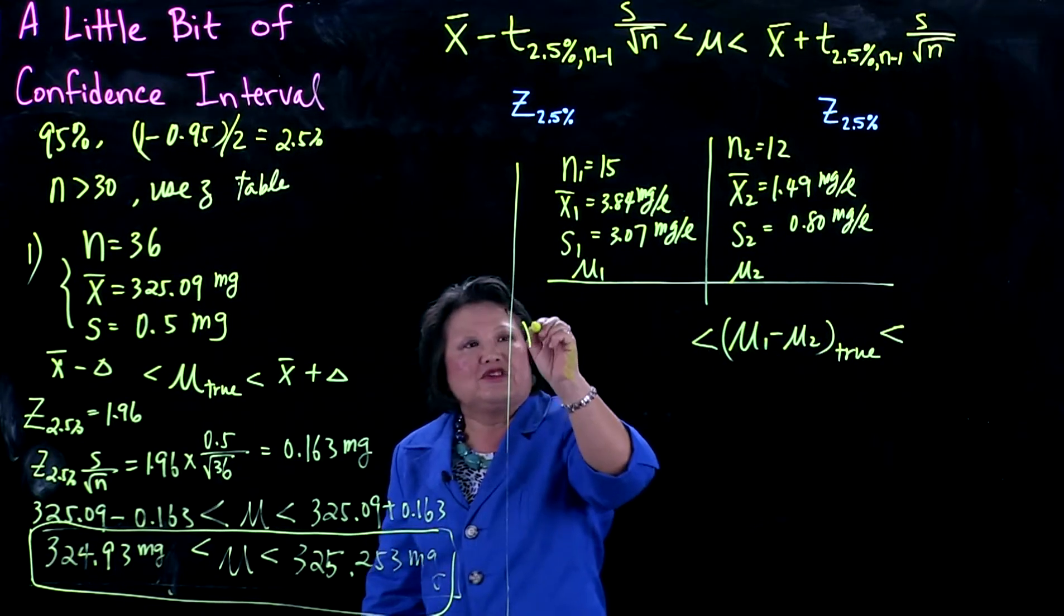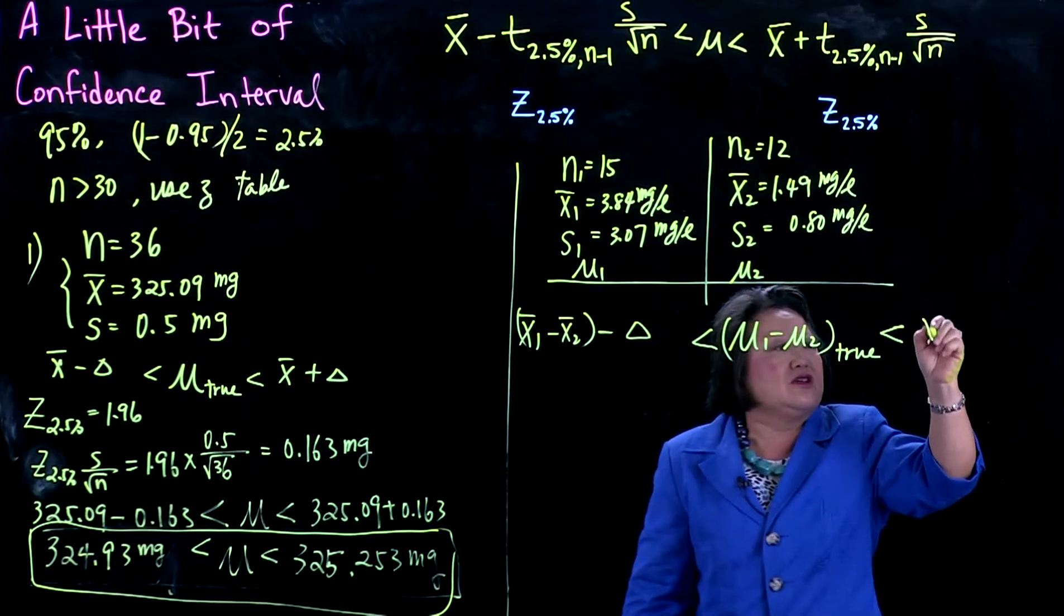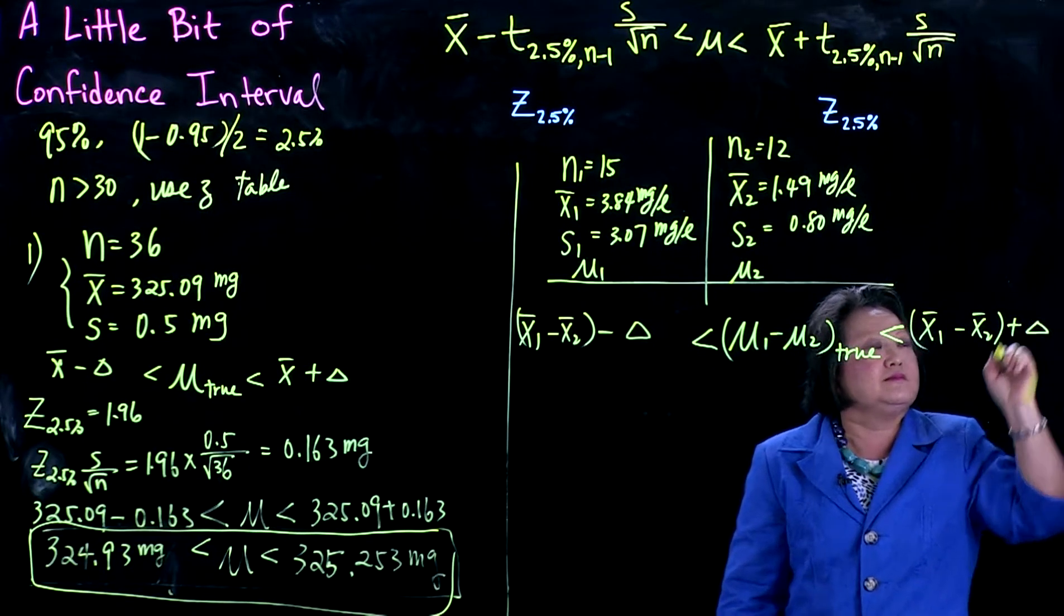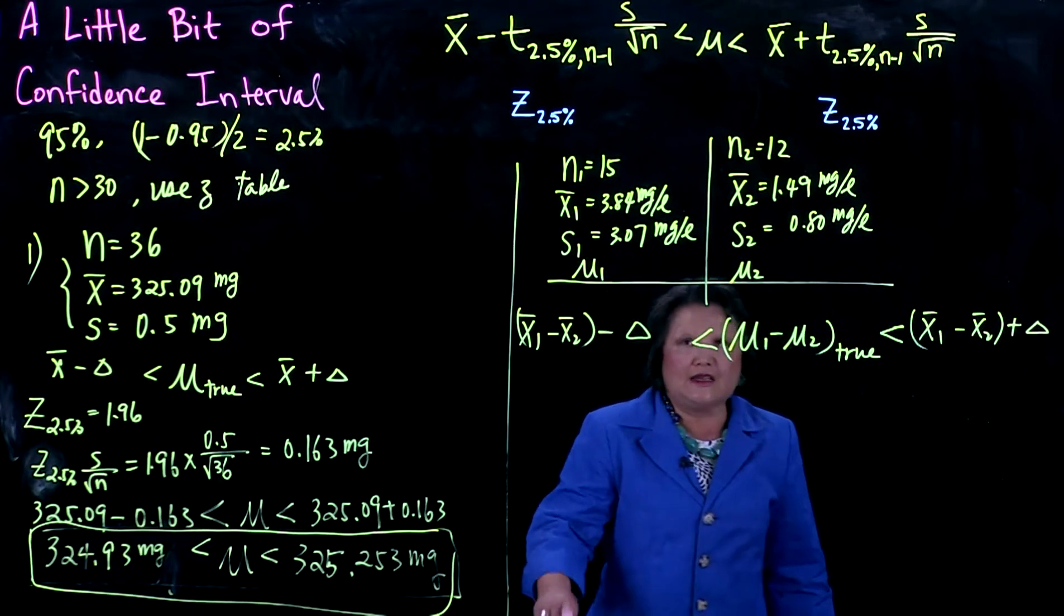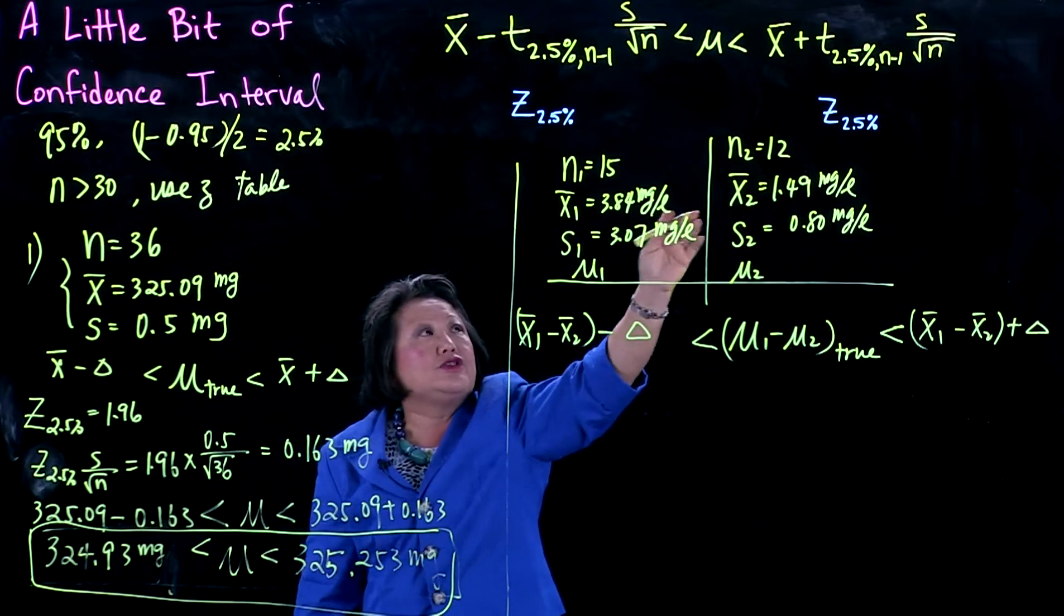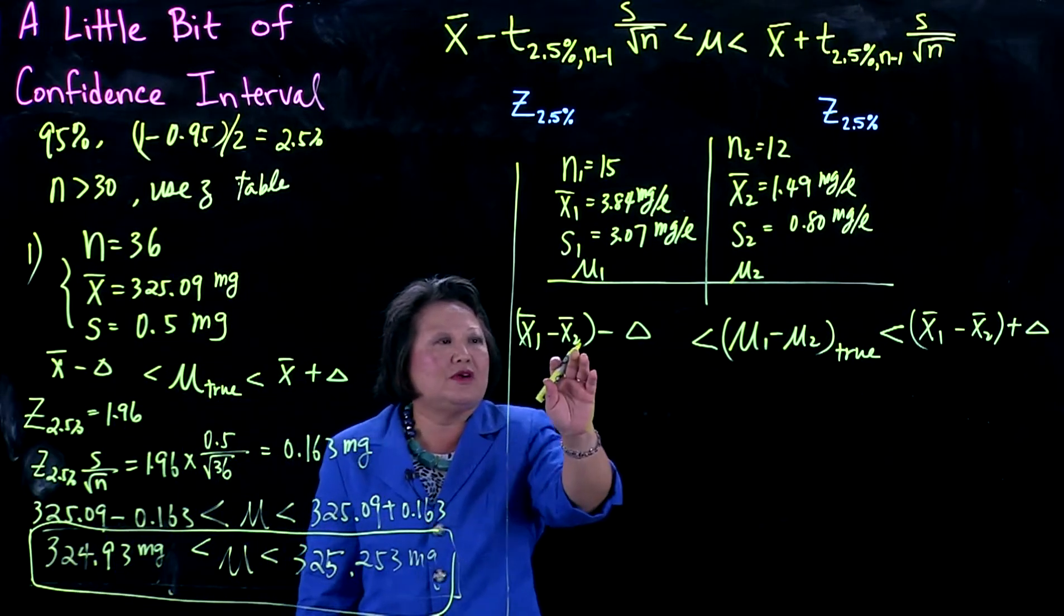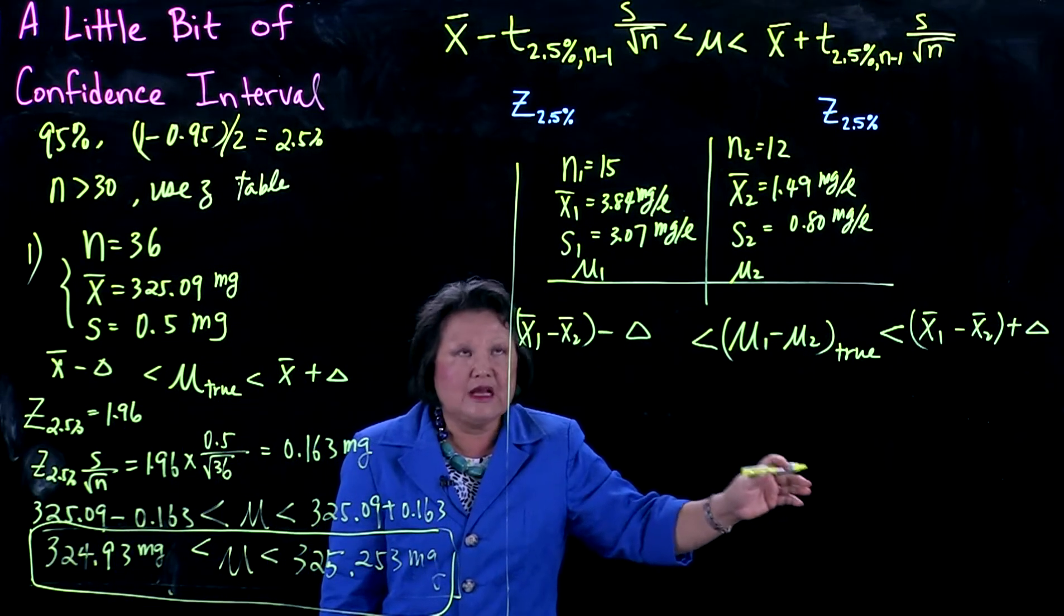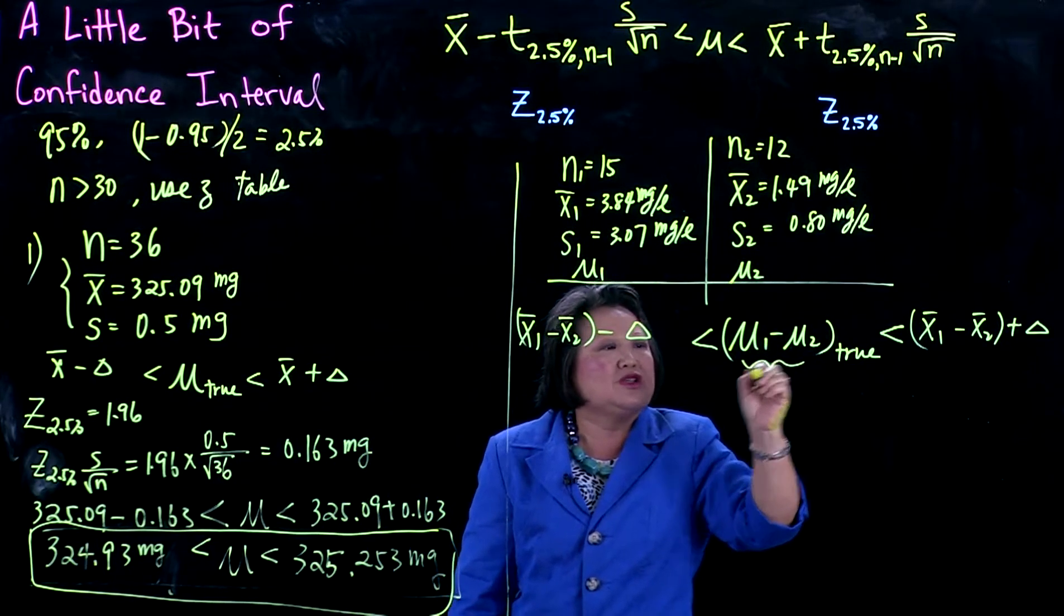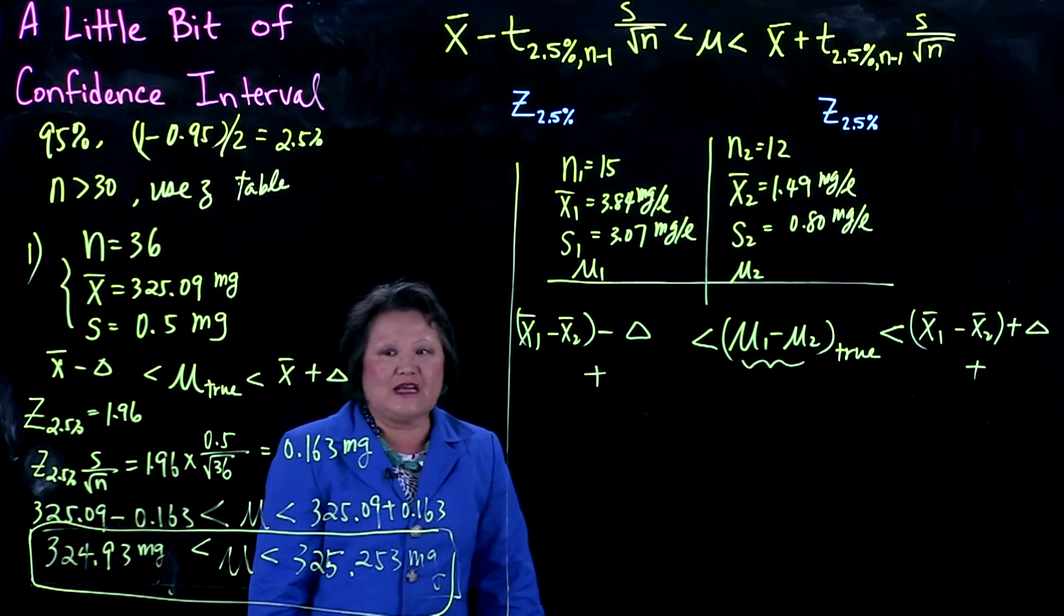You put a bound. This is going to be x1-bar minus x2-bar minus something, and x1-bar minus x2-bar plus something. This 'something' is based on s1, s2, n1, n2, and the sample means. We want this number to be a positive number—positive means before is higher than after.